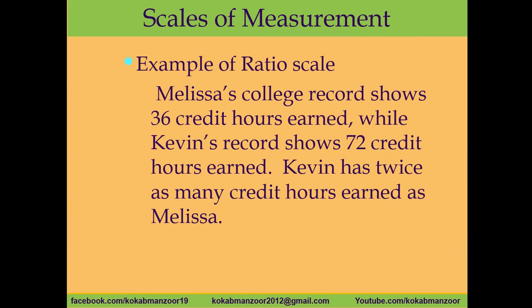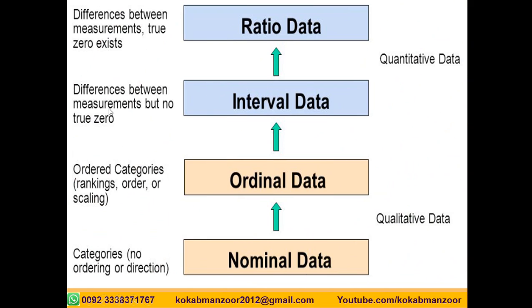For example, if Melissa's college record shows 36 credit hours earned and Calvin's shows 72 credit hours, this means Calvin has twice as many credit hours as Melissa. These are real figures — marks, sales, height, weight, and time are all measured on the ratio scale. In ratio scale, zero means zero, one means one, and ten means ten. In interval scale we assign hypothetical numbers, whereas in ratio scale we have exact real measurements with a true zero.